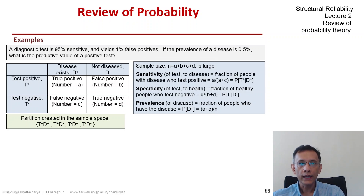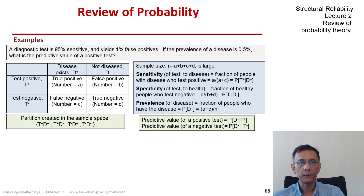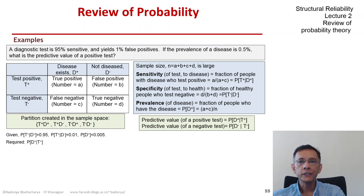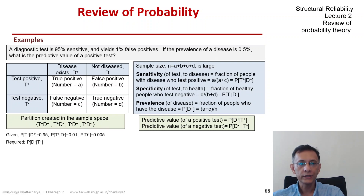The specificity to health of the test is P of T-minus given D-minus. The prior knowledge about the situation is the prevalence of the disease, which is P of D-plus. What these tests aim to do is update this prior knowledge with the test outcome. So the predictive value of a positive test is P of D-plus given T-plus, and that of a negative test is P of D-minus given T-minus. Now let's put in the numbers from the problem statement: P of T-plus given D-plus is 95%, P of T-plus given D-minus is 1%, and the prevalence of the disease is 0.5%.